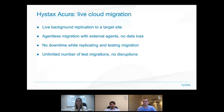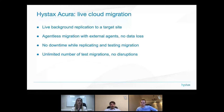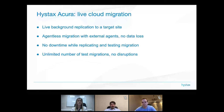The second advantage is agentless migration with an external agent and no data loss. We have not only internal agents but also an external one for VMware, which works at the hypervisor level and can replicate and detect all machines on the host. Regarding no data loss, we provide consistent replications. For Windows, our agent uses regular VSS to create snapshots, flushing all data to ensure consistency.